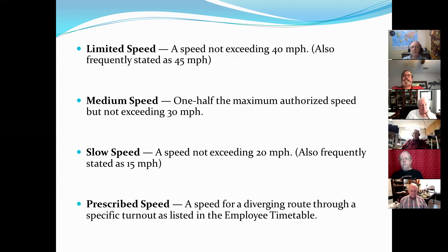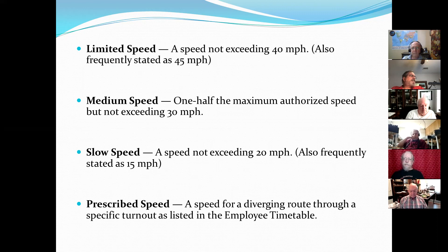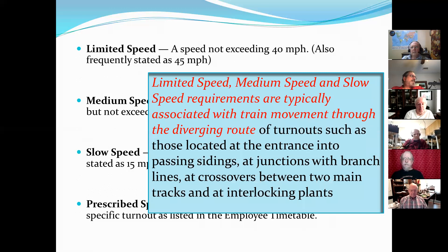Then you have what's called a prescribed speed. This is not an actually defined speed, but it's called prescribed speed because you have to go to the operating manual and look up what that means. It's used for going to a turnout or diverging route, and we'll see that come to life as we talk about route signals. Limited speed, medium speed, and slow speed are movements through a diverging route — they're not really meant for mainline speed.